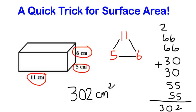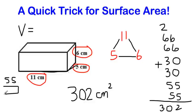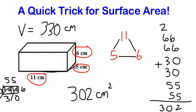Don't forget that finding surface area is different from volume. For volume, we're doing length times width times height. Let's look at what the volume would be for this shape: 11 times 5 times 6. So 11 times 5 is 55, and 55 times 6 is 330. The volume for this shape would be 330 centimeters cubed. Don't confuse surface area and volume — surface area is finding the area of all 6 surfaces, whereas for volume we're just multiplying the length, width, and height.